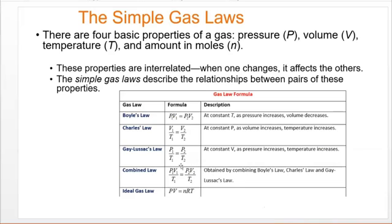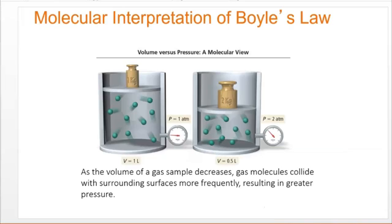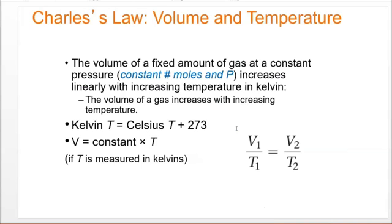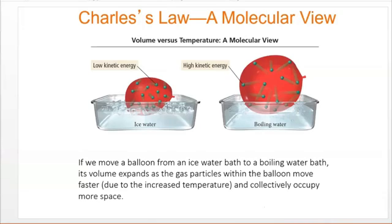The combined gas law combines all three of these relationships. And then the ideal gas law introduces the moles. So this is Boyle's law. You can see if you decrease the volume by increasing the force that you're putting down on the piston, this will increase the pressure. There's Charles's law, the example with the balloon. If you have the molecules moving at a low kinetic energy in a cold environment versus a warmer environment, the molecules will move faster and the volume will expand.